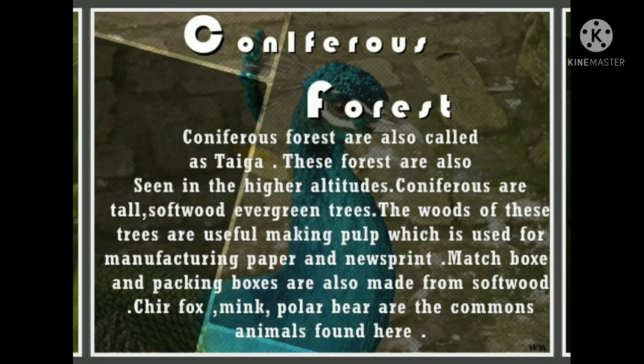Sixth, coniferous forests, also called taiga forests. These forests are seen in the higher altitudes. Coniferous trees are tall, softwood, evergreen trees. The wood of these trees is useful for making pulp, which is used for manufacturing paper and newsprint. Matchboxes and packing boxes are also made from softwood. Tiger, fox, mink and polar bear are the common animals found here.